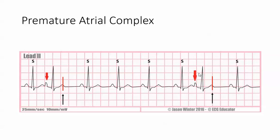The way I confirmed that is by taking the distance from this R wave to this R wave. You can use calipers and then place them here, because this is the wave. The next beat should have appeared here — so you can see it's a premature beat with an odd-looking P wave.